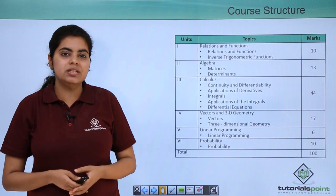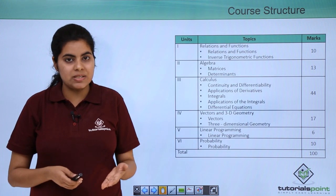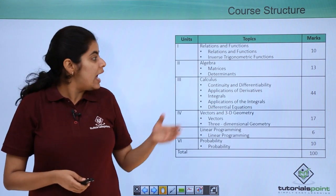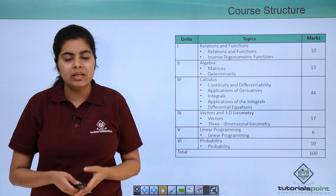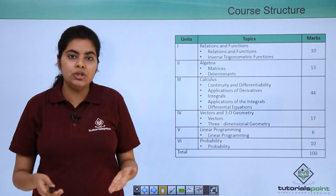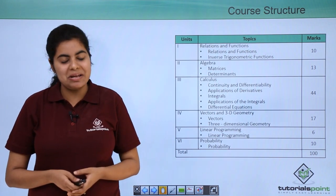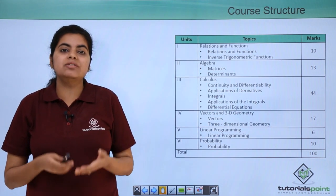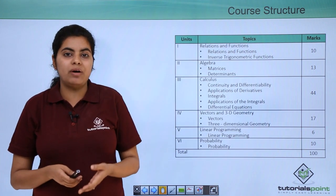About the second unit, that is algebra, there are again two chapters: matrices and determinants. And this unit has overall weightage as you can see of 13 marks. 13 marks are a huge number when considered for scoring good marks in mathematics. This is one of the easiest units which everybody can do and everybody finds interesting.